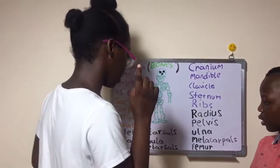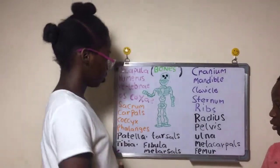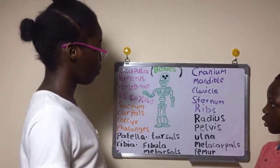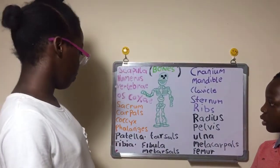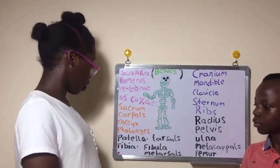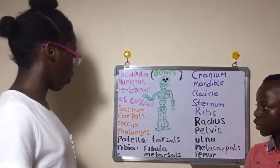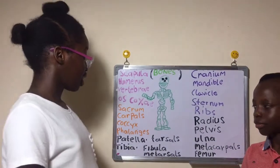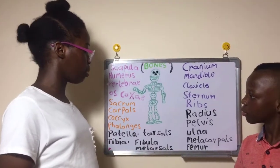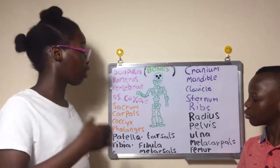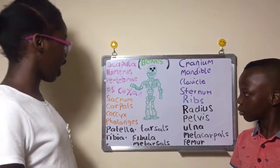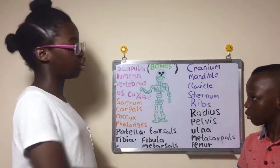Then there are the tarsals and metatarsals. And going up, we find the pelvis and the coccyx. The coccyx is not really considered a true bone because it was supposed to be a tail, but it did not develop very well. So now we remain with this vestigial structure.